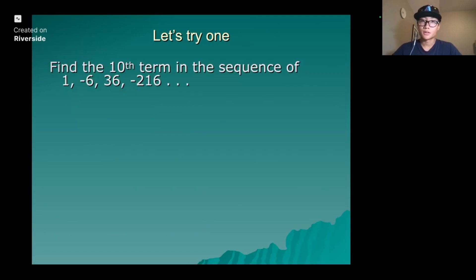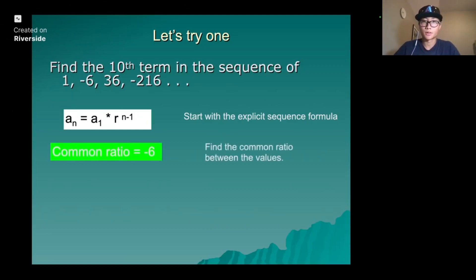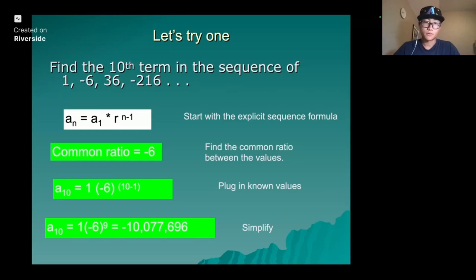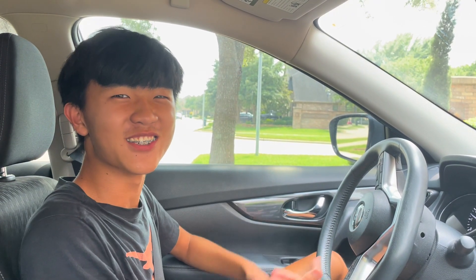Let's try one together. Find the 10th term in the sequence. You would do the exact same thing as we did in the last two slides. Start with the explicit formula or recursive view. Either one works. But in this case, we're using explicit. Find the common ratio between the values, plug in known values and simplify. We get negative 10 million. Oh, it makes a lot more sense now.